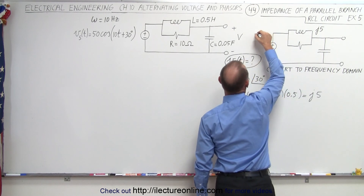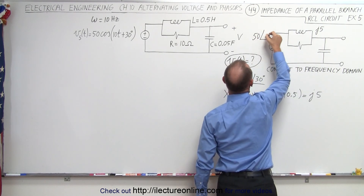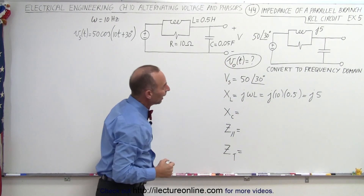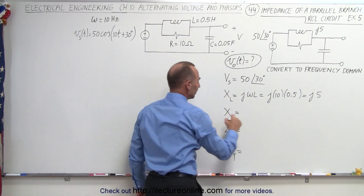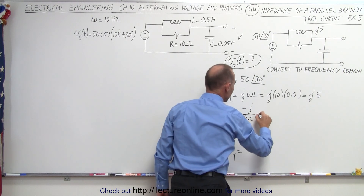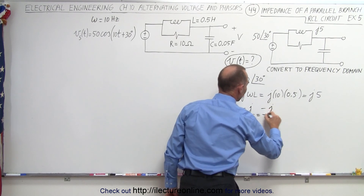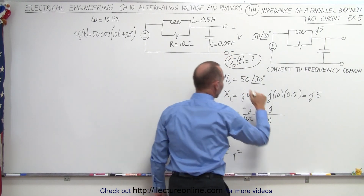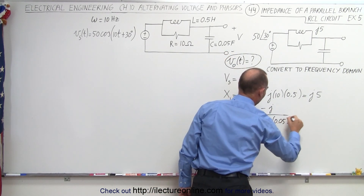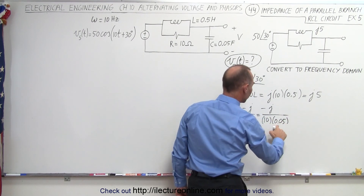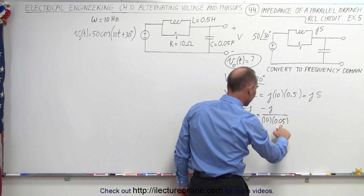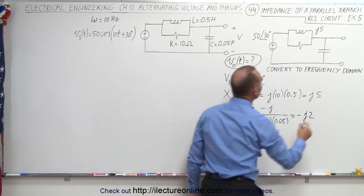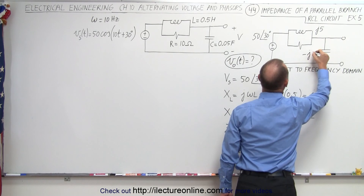For the capacitor, the impedance is minus j over omega times C, which is minus j divided by 10 times 0.05. That gives 0.5 in the denominator, and taking the inverse gives us minus j2. So that gives us the value for the capacitor.